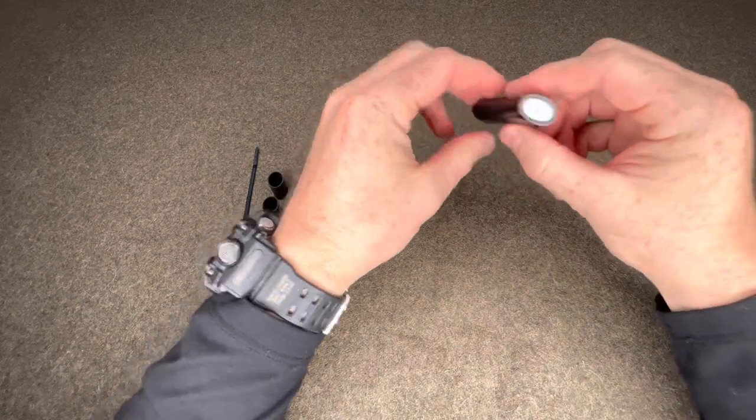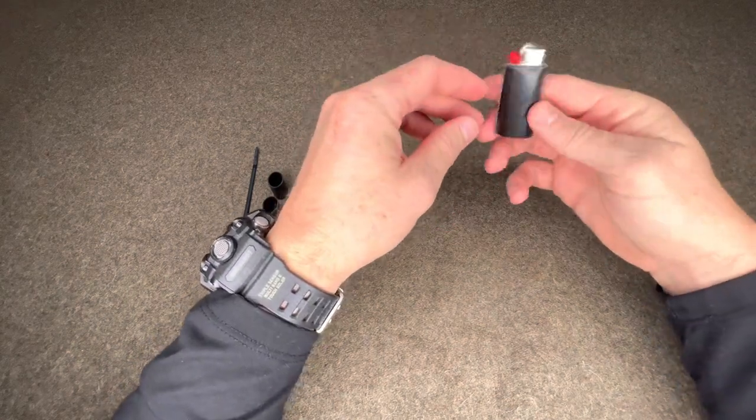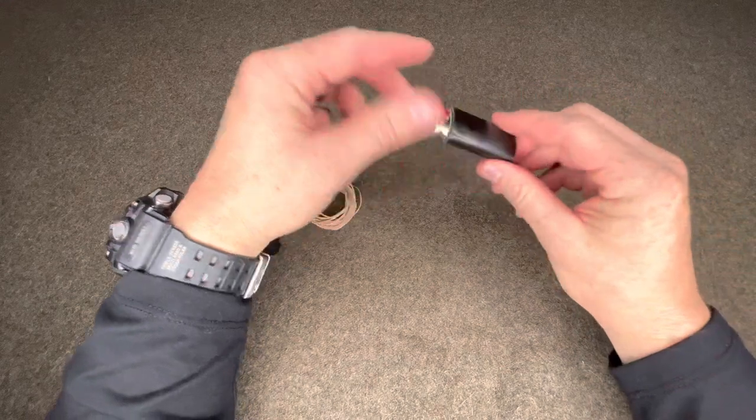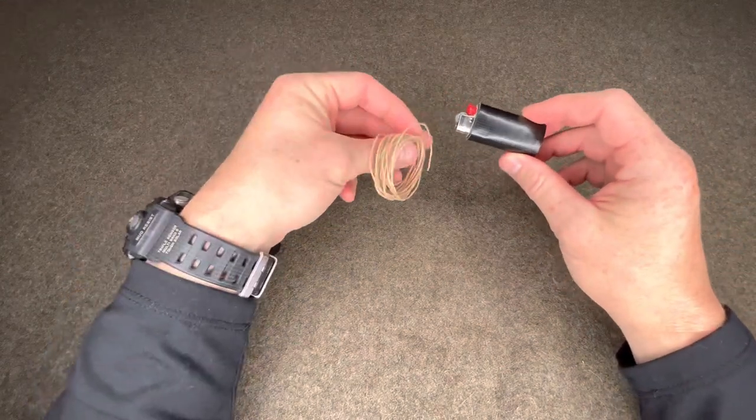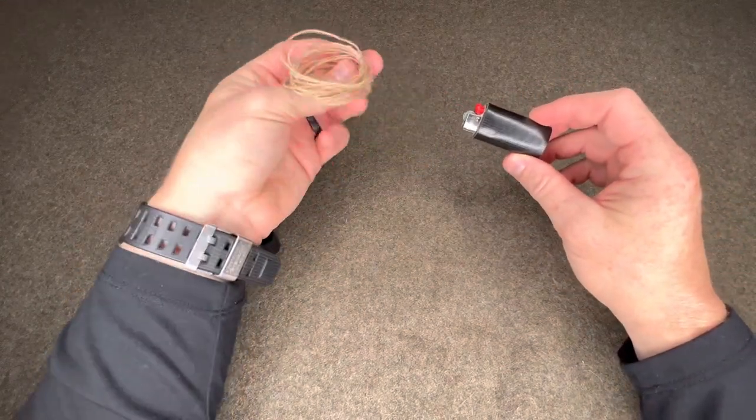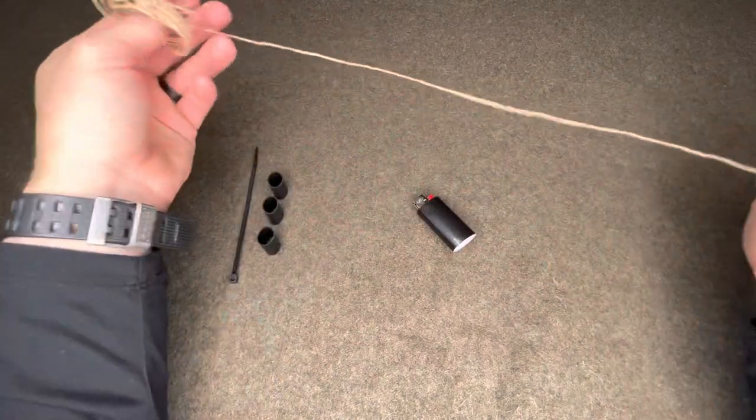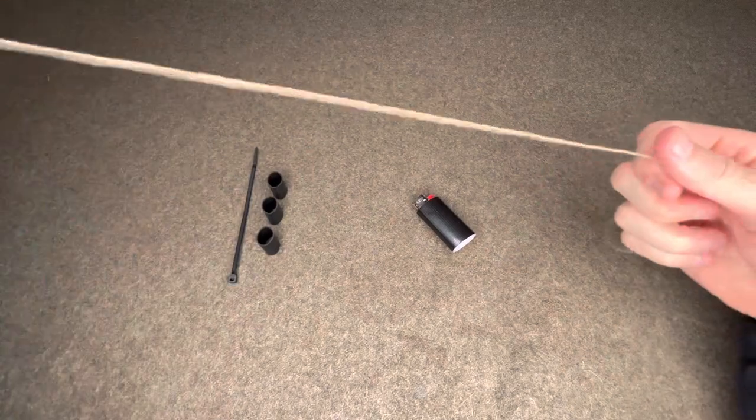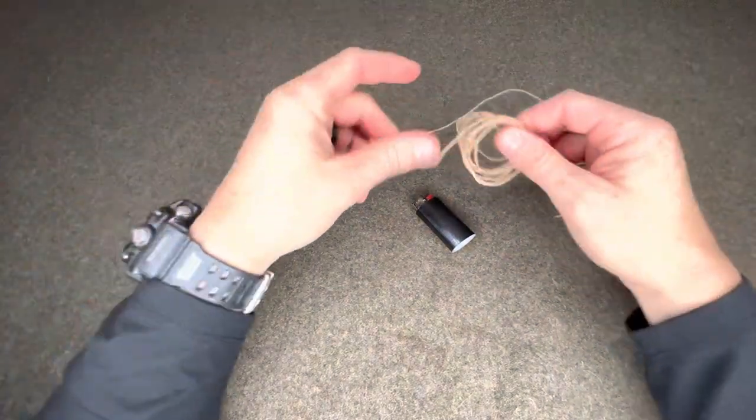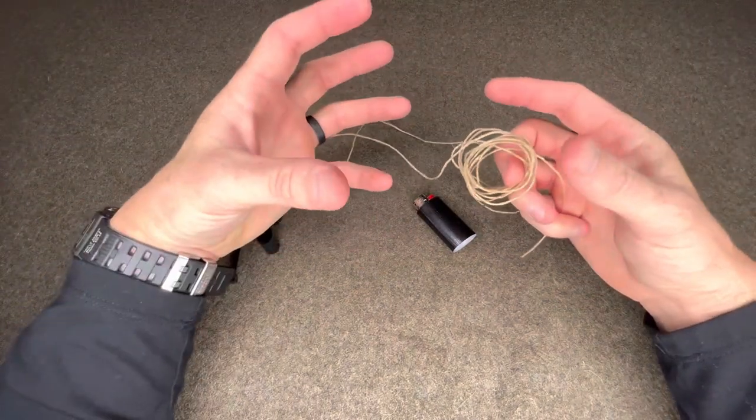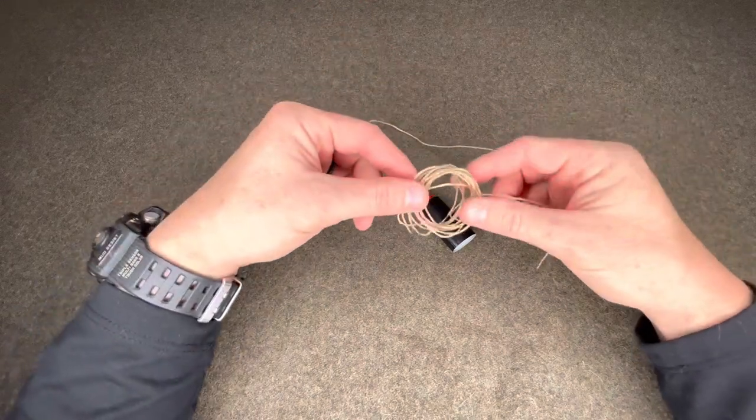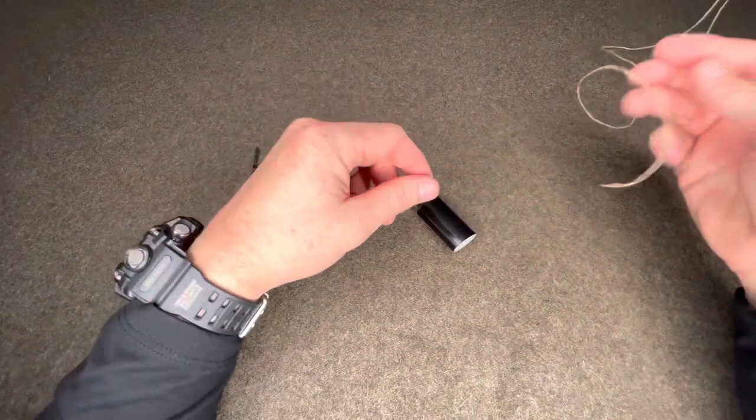Alright, so once it's all wrapped up, that's what it should look like. It doesn't really increase the size of the lighter that much. Next step is take some of this waxed candle wick, it's made of hemp fiber. I'll post the link for this below. It usually comes in like a little ball, spool, but I've used up all the rest of it. This is what I have left. This is about seven feet.